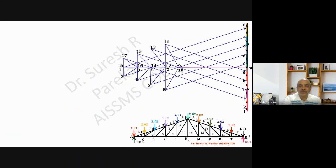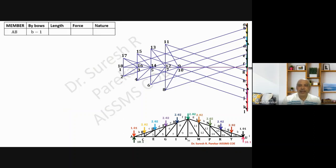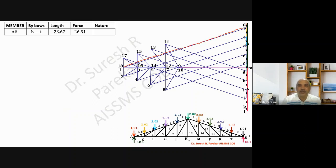First we have member AB. I have measured the length b-when on the force diagram. By measuring this length b-when and multiplying by 1.12, we get 23.67 multiplied by 1.12, which gives 26.51 kilonewtons.